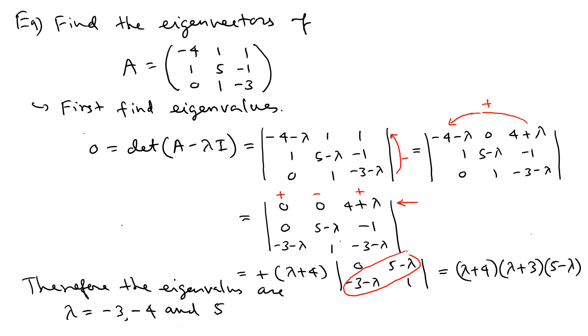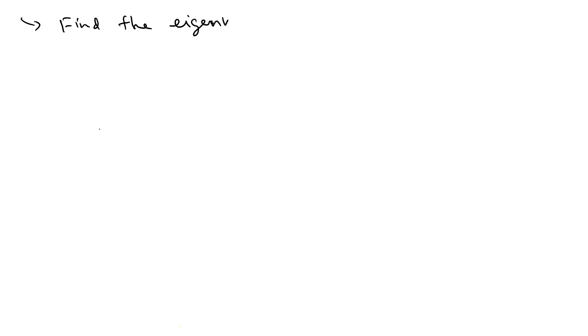For the second step, we use a new technique to find the eigenvectors using what I call eigenmatrices — a term I introduced about a year ago. The notation is kappa(lambda, A), where lambda is the eigenvalue and A is the matrix. We evaluate the three eigenmatrices using this notation.